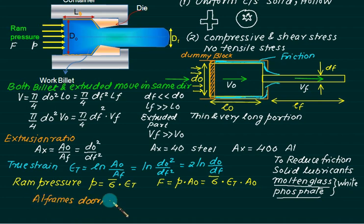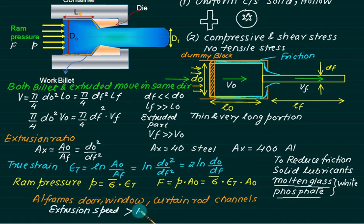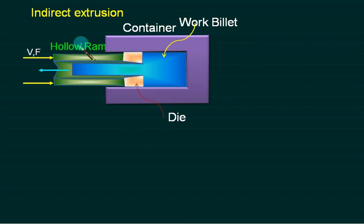Applications are aluminum frames for doors, windows, curtain rod and channels. Remember that extrusion speed is very high compared to inlet velocity. As far as rolling and extrusion are considered, extrusion speed is very high compared to rolling operation. Therefore, for large scale manufacturing, we are preferring extrusion. Extrusion speed is greater than rolling operation.